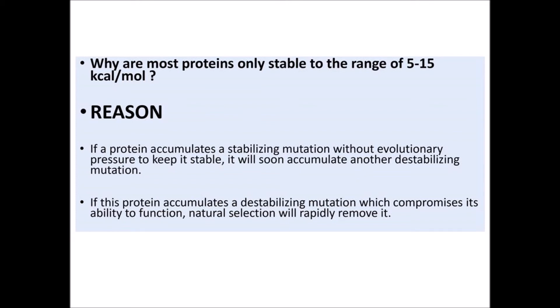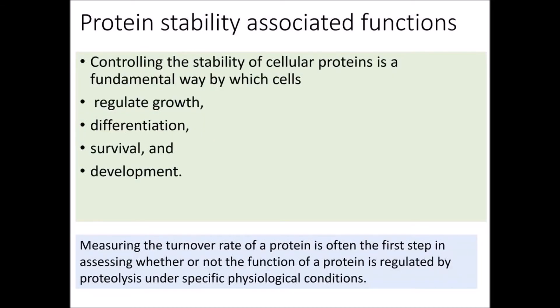What is the relationship between evolution and protein stability? Why are most proteins only stable in the range of 5 to 15 kilocalories per mole? If a protein accumulates a stabilizing mutation without evolutionary pressure to keep it stable, it will soon accumulate another destabilizing mutation. If this protein accumulates a destabilizing mutation that compromises its ability to function, natural selection will rapidly remove it.